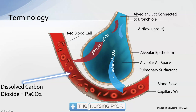Next we have dissolved carbon dioxide in the blood. PaCO2 is the partial pressure of CO2 in the arteries. We measure this on the arterial side when we do an arterial blood gas, giving us the CO2 level — the amount of CO2 remaining in the arterial blood before it even reaches the tissue.